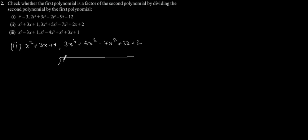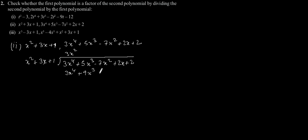The dividend is 3x⁴ plus 5x³ minus 7x² plus 2x plus 2, and the divisor is x² plus 3x plus 1. By multiplying 3x² with the divisor we will get 3x⁴ plus 9x³ plus 3x².